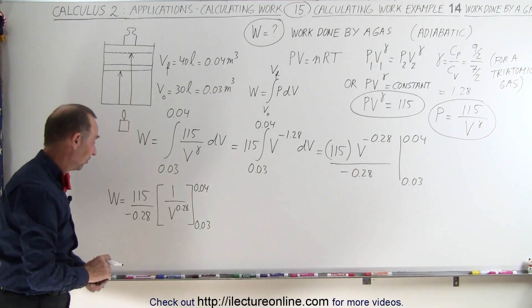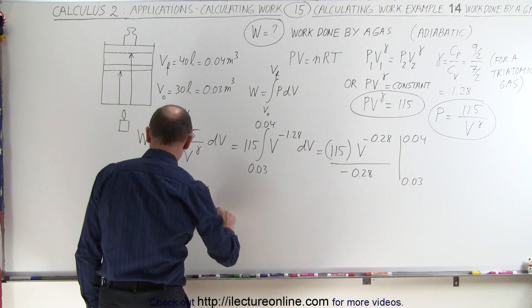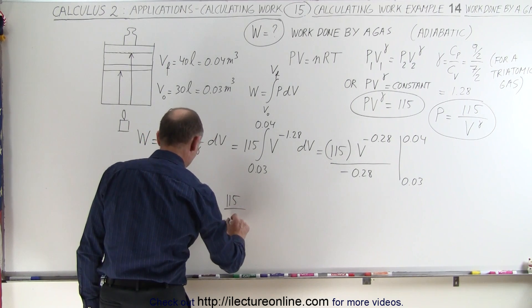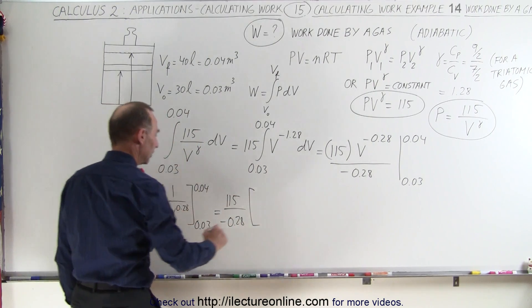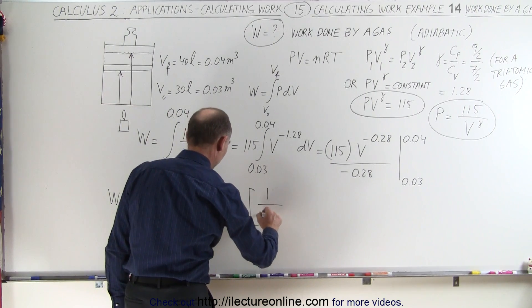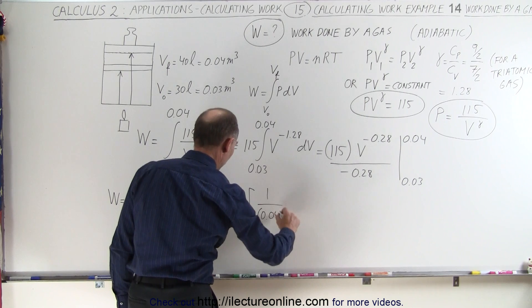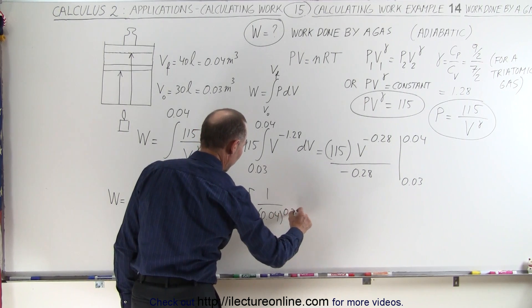Now we can go ahead and plug in the limits. We have to plug in both. This is equal to 115 divided by minus 0.28 times, when I plug in the upper limit I get 1 over 0.04 raised to the 0.28 power.